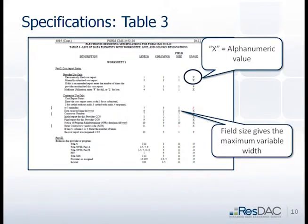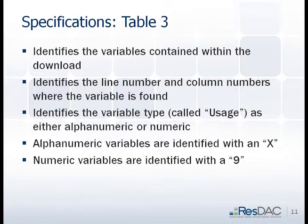Opening up Table 3, the Specifications Table 3, let's talk about usage — there was a question about that earlier, but here is where you'd find out. Looking at Worksheet S, specifically Manually Submitted Cost Report, the value is listed under usage as an X. That indicates it's an alphanumeric variable — it would be found in the alpha file. Another important field is the field size, which tells you the width of the variable. The field size and the usage are key pieces in the Specifications document — usage tells you whether it's in the numeric file or the alpha file. It also includes line numbers and column numbers, which are useful, but the most useful part is usage to identify if a variable falls in the alpha or numeric file.